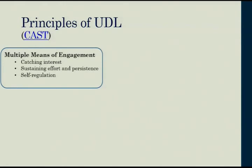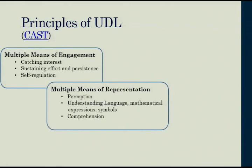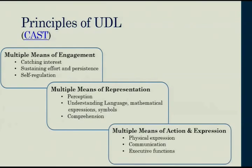CAST starts with three main principles when you're designing learning for everybody. The first is offering multiple means of engagement - not just catching students' interest, but finding ways to sustain their effort and persistence over time, and self-regulating, knowing when their energy is tapping out and when they need something different. The second principle is multiple means of representation - representing new information, presenting new knowledge, making sure that they can perceive it, understand any language or symbols, and bring comprehension to it.